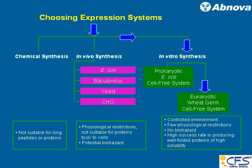Currently, there are two major in vitro cell-free synthesis methods. One is a prokaryotic E. coli-based cell-free system, and another is a eukaryotic wheat germ cell-free system — this is what we produce. With this eukaryotic system, you have a very well-controlled environment, you are not relying on natural processes, there are very few physiological restrictions, there is absolutely no biohazard, and there is a very high success rate in producing well-folded proteins of very high solubility.